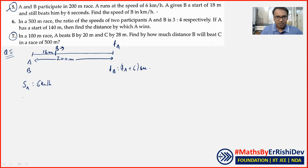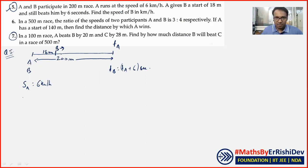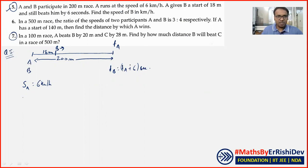A runs at a speed of 6 km per hour. A gives B a start of 18 meters. Still A beats B by 6 seconds.